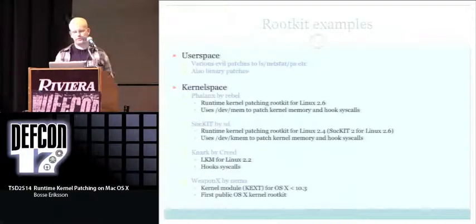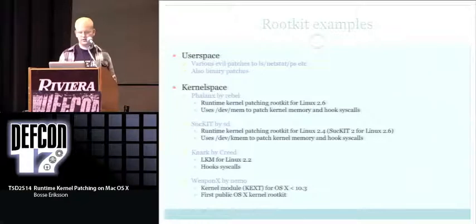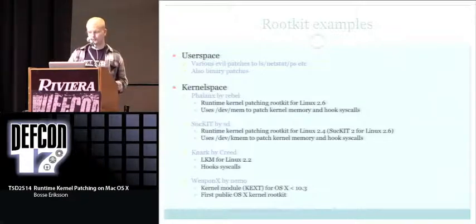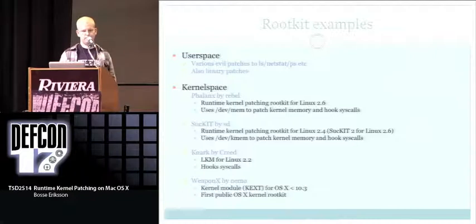Examples of rootkits: user space ones include various malicious patches to ps, netstat, ls, and you can also do binary patching of SSH daemons and similar tools. On the kernel side, we have Phalanx by Rebel, a kernel patching rootkit for Linux 2.4 that uses the /dev/mem device to patch syscalls. And socket by SD — one of the first public rootkits to use runtime kernel patching, also for Linux 2.4.